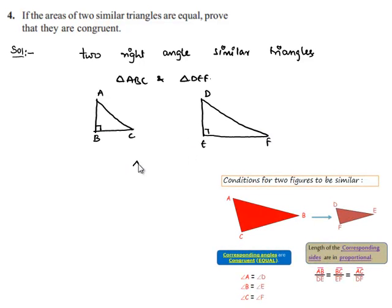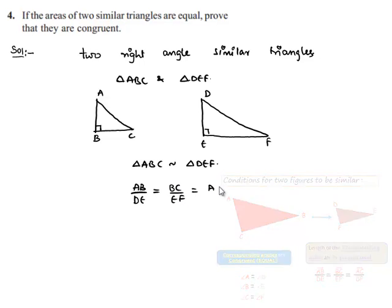Now as triangle ABC is similar to triangle DEF, we can write corresponding sides in proportion, that is AB by DE is equal to BC by EF, that will be equal to AC by DF.